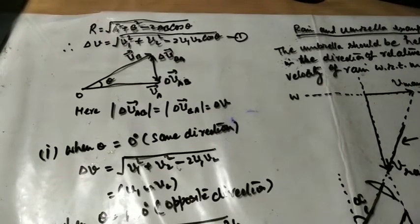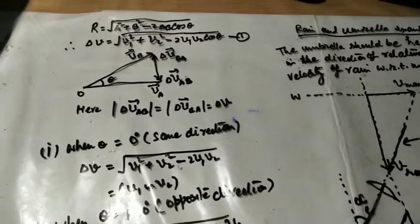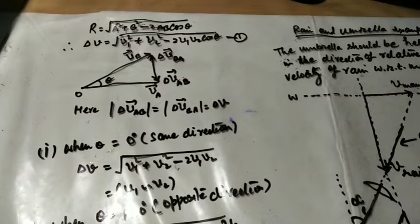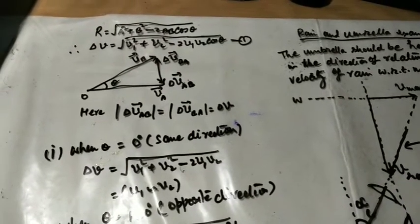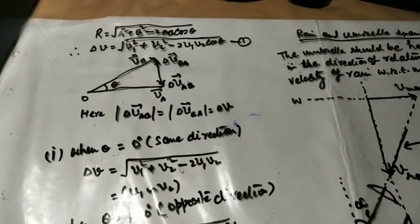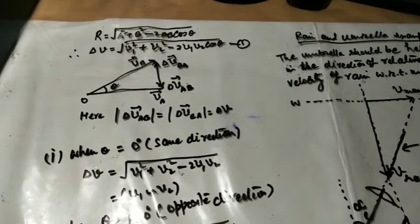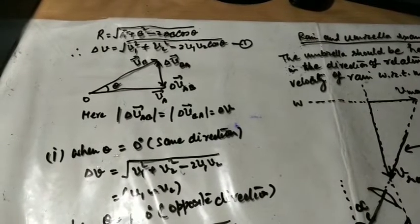You know that difference of two vectors a and b is given by formula r equals under root a square plus b square minus 2ab cos theta. The terms coming in this equation: a and b are magnitudes and theta is angle between the two vectors.